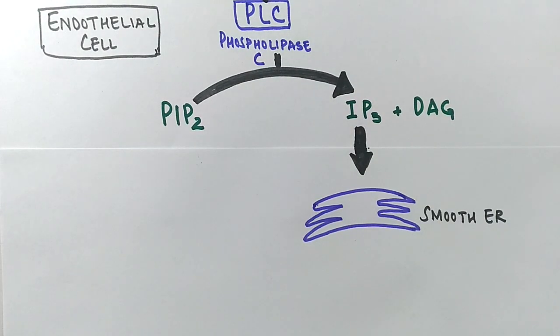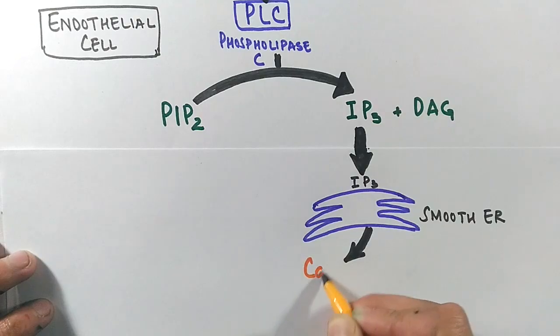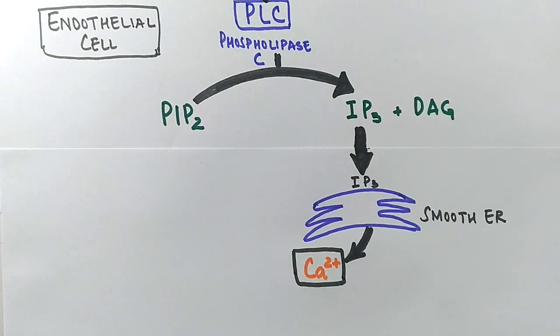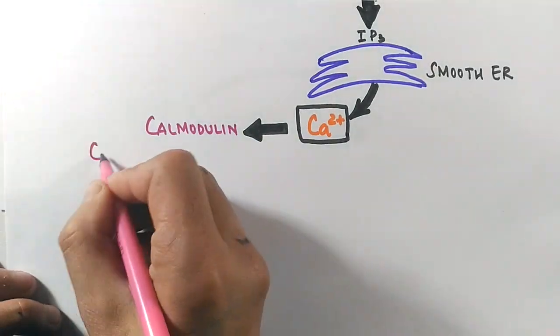Here this IP3 molecule stimulates the opening of calcium ion channels, and in this way calcium ions are released from endoplasmic reticulum. In the endothelial cell, we have a protein called calmodulin which gets activated by calcium ions.